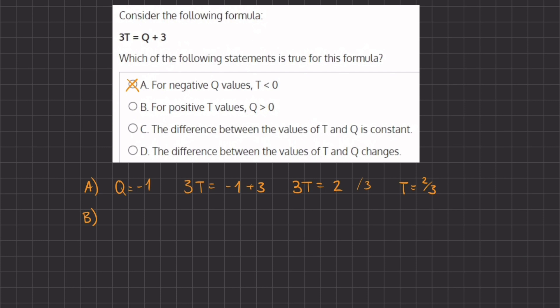For positive T values, Q will be greater than 0. Now if we take the value of 1 and plug it in for T, we will get a negative value for Q.